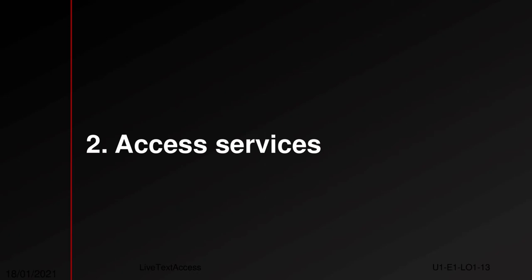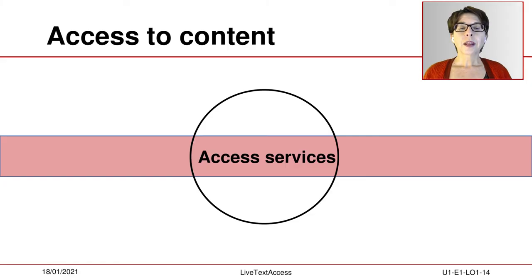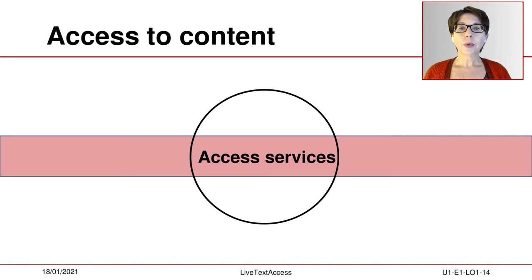When media products and audiovisual environments are not accessible, access services provide persons with a disability with an alternative way to access content. The term access services or accessibility services is used in audiovisual media contexts to refer to services that convey content in an alternative way. Real-time subtitles are an example — this access service provides persons with hearing loss with subtitles as a written alternative to spoken speech or other information conveyed orally, such as music or sounds.